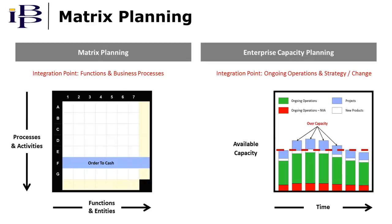A key enabler of matrix planning are planning models that integrate financial, operational, business process, activity, and supply chain planning processes. This is represented by the capacity planning graphic on the right side of the screen and is addressed in a separate video.